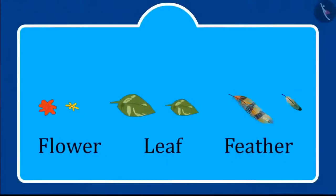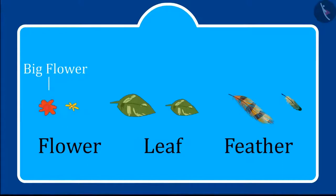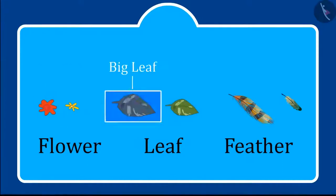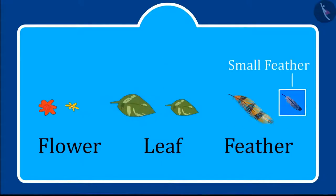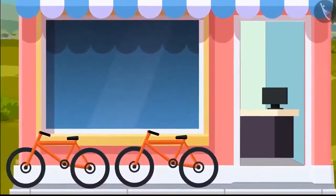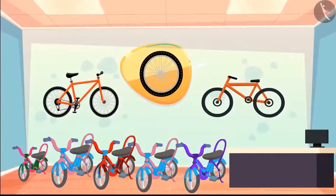Children, you saw how Chotu recognized big and small things. This is a small flower and this is a big flower. This is a small leaf and this is a big leaf. This is a small feather and this is a big feather.